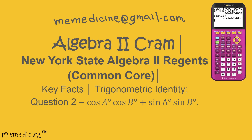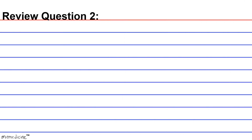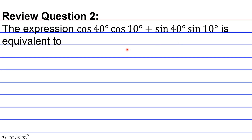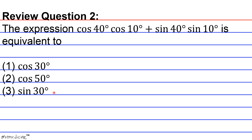Let's delve into the problem — Review Question 2. The expression: the cosine of 40 degrees times the cosine of 10 degrees plus the sine of 40 degrees times the sine of 10 degrees is equivalent to: 1. The cosine of 30 degrees; 2. The cosine of 50 degrees; 3. The sine of 30 degrees; or 4. The sine of 50 degrees. You decide — press pause right now and take a moment to formulate your solution.